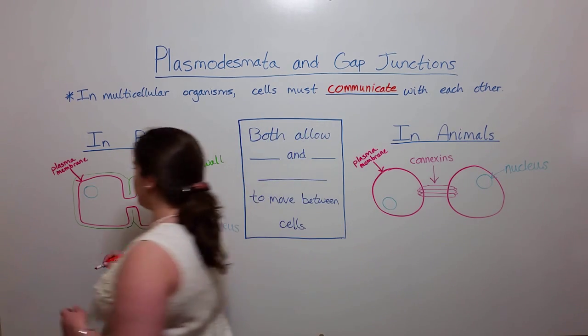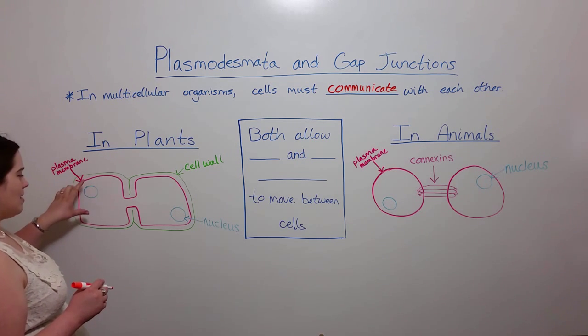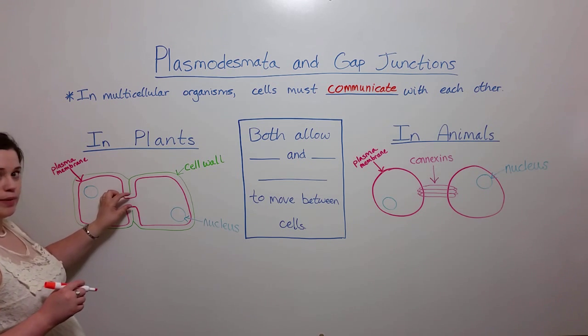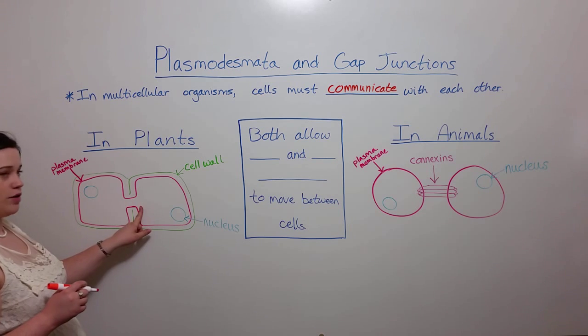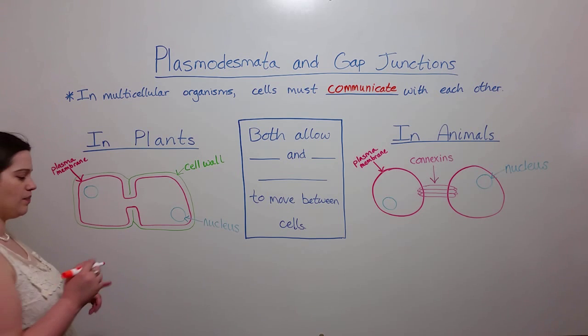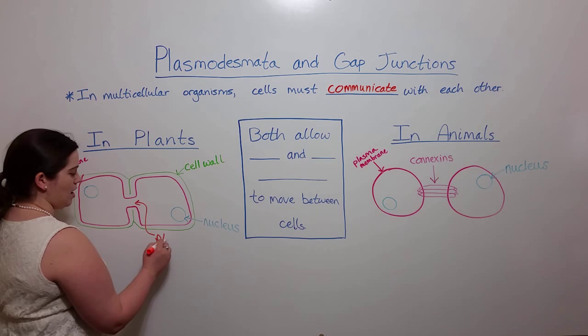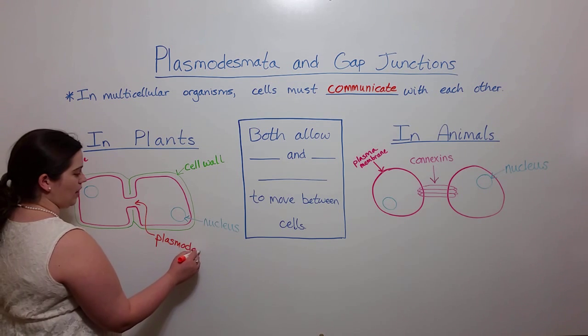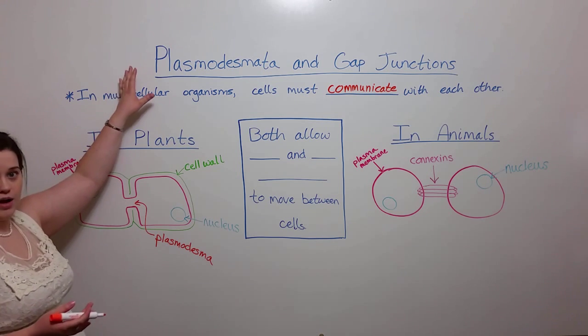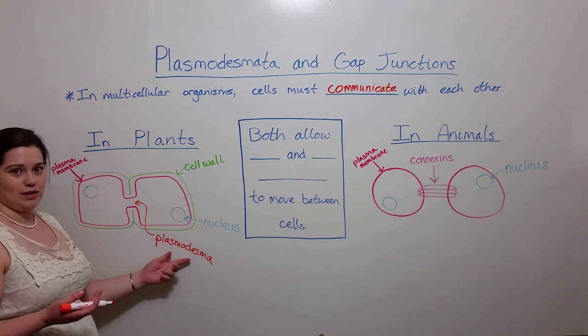But what else is pictured is this channel here. You can see that the plasma membrane of one cell connects to the plasma membrane of the neighboring cell through essentially a hole in the cell walls. This channel right here is called a plasmodesma. That is the singular form of plasmodesmata. Plasmodesmata refers to two or more plasmodesma.